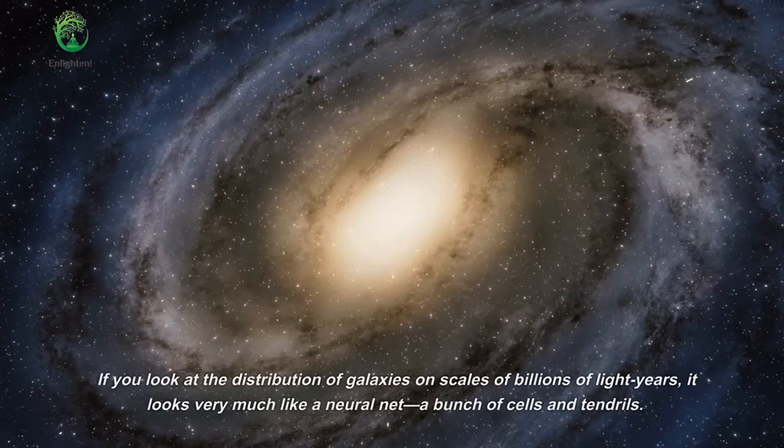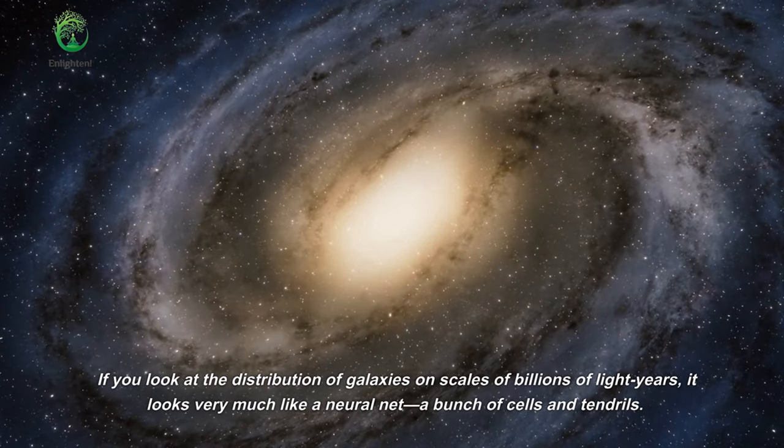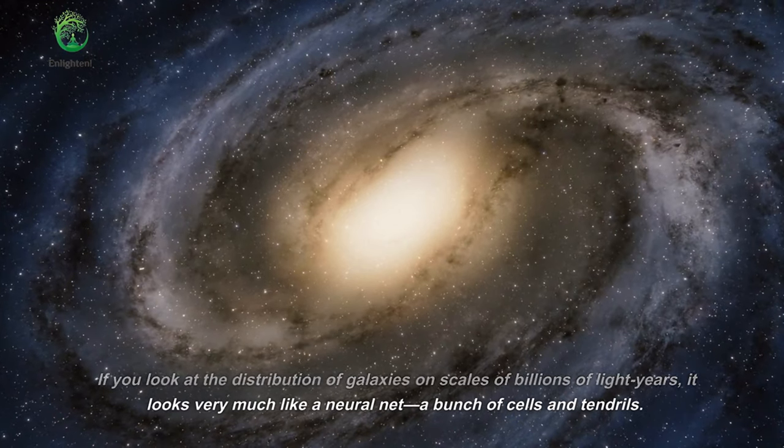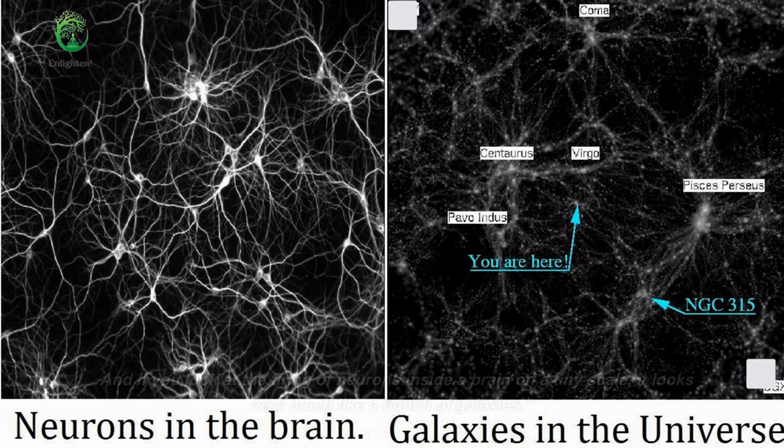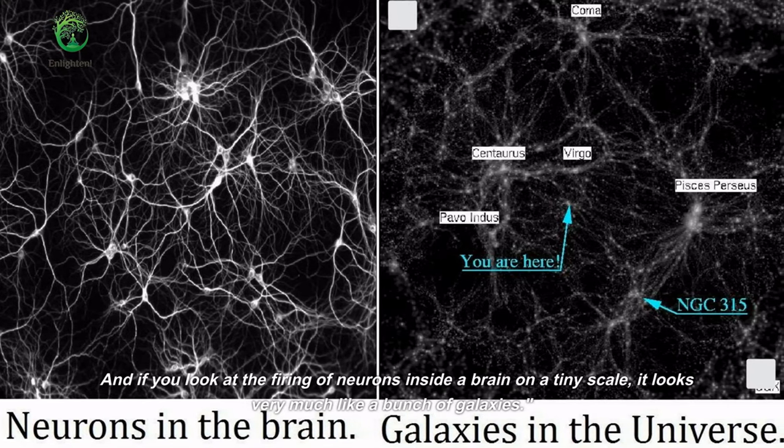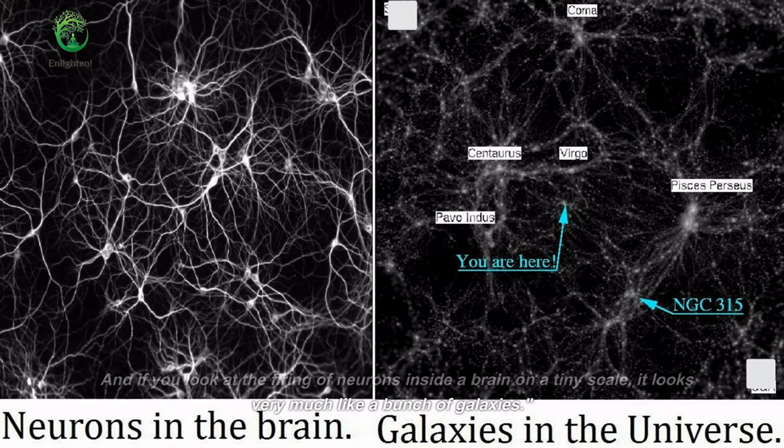If you look at the distribution of galaxies on scales of billions of light years, it looks very much like a neural net, a bunch of cells and tendrils. And if you look at the firing of neurons inside a brain on a tiny scale, it looks very much like a bunch of galaxies.